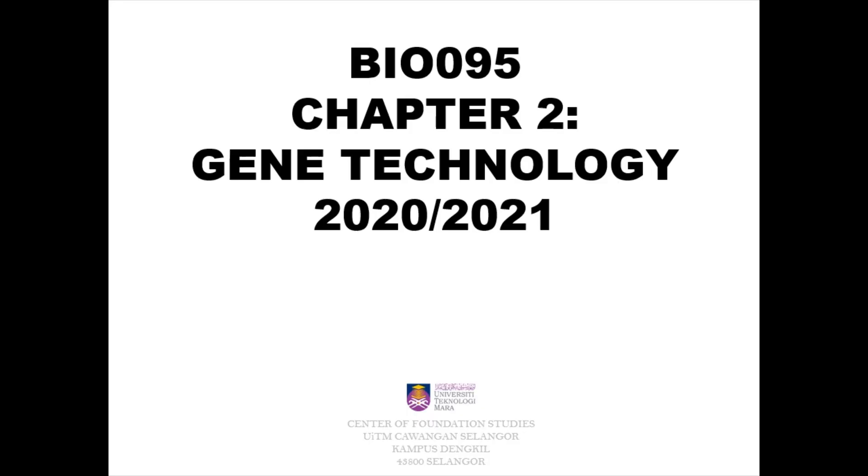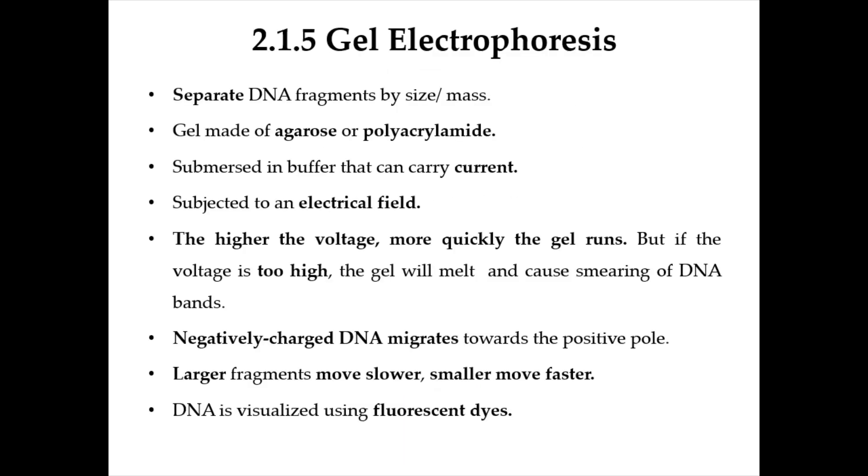Hello everyone, this is Chapter 2, Gene Technology, subtopic 2.1.5, Gel Electrophoresis. Gel electrophoresis is a method to separate DNA fragments by size or mass. The gel used is made of agarose or polyacrylamide. The gel is submersed in a buffer that can carry electrical current.